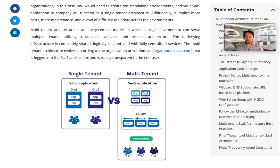Here you can see single-tenant versus multi-tenant as a diagram. In the single-tenant, you have your SaaS application covering two different orgs and their users. In the multi-tenant case, you have your SaaS application, a database for each organization, a cluster containing Docker containers for each application for the different orgs, a load balancer, and then the different orgs connecting to that load balancer.